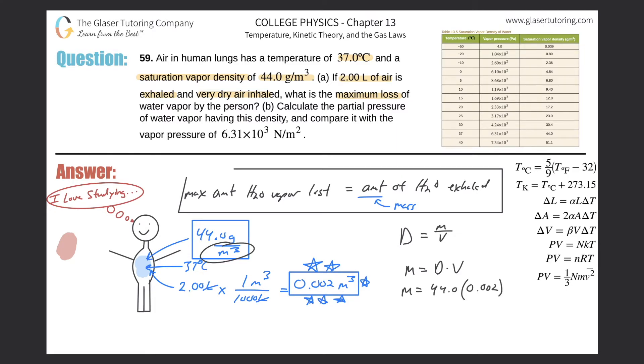The units are all consistent—this is cubic meter, the volume's in cubic meter, the units here are grams. The maximum amount of water vapor that will be lost is simply 44 times 0.002, which equals 0.088 grams of water. This is the maximum amount that is lost.